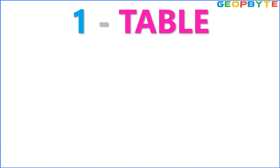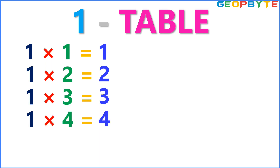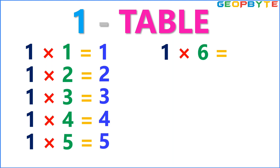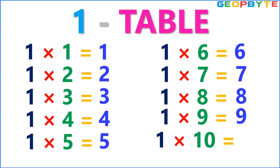Now let us see the 1 table. 1 1s are 1. 1 2s are 2. 1 3s are 3. 1 4s are 4. 1 5s are 5. 1 6s are 6. 1 7s are 7. 1 8s are 8. 1 9s are 9. 1 10s are 10.